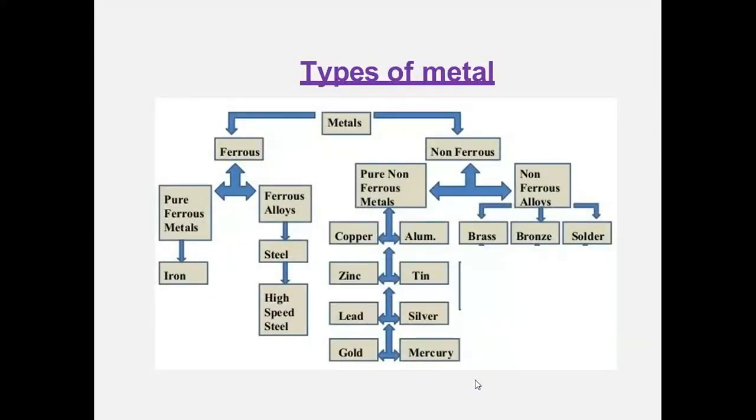Types of metals are majorly classified into two types: ferrous and non-ferrous. In ferrous alloys, you have ferrous alloys and pure ferrous metals. In alloys, you have steel and high-speed steel. Pure ferrous includes iron.